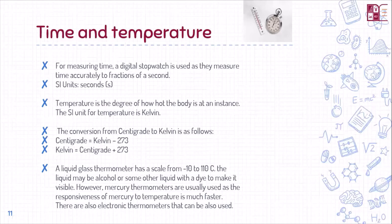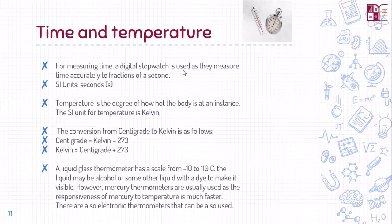Now for time and temperature: for measuring time, a digital stopwatch is used, accurate to a fraction of a second — the SI unit is seconds. Temperature is the degree of hotness or coldness of any object or body, and its SI unit is kelvin. An important conversion that comes up in exams: to convert from kelvin to Celsius, subtract 273; to convert from Celsius to kelvin, add 273.